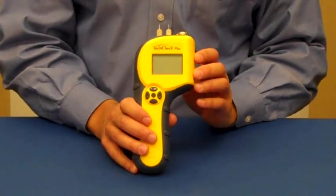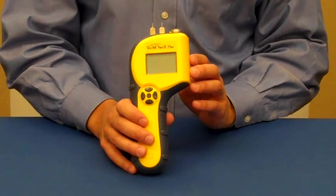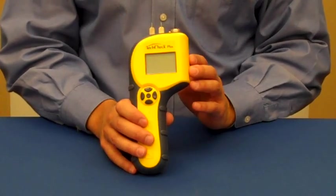TechCheck Plus is a 2-in-1 moisture meter. When using it in pin mode, you can measure moisture in drywall, wood materials, and insulation.